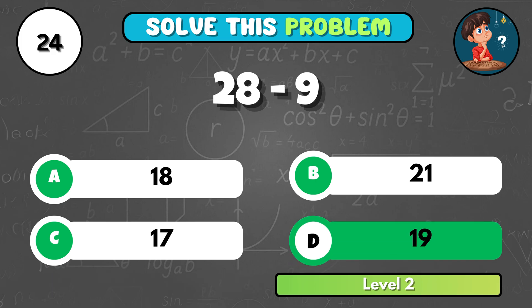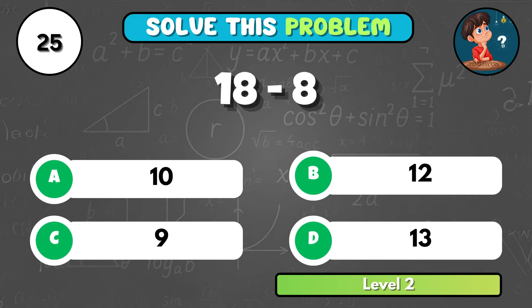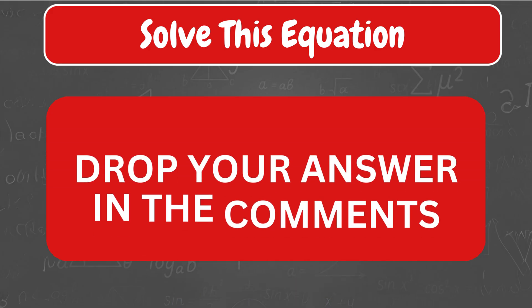What is 28 minus 9? It equals D, 19! Last one in this set! 18 minus 8 equals what? That's A, 10! Try solving this equation! If it feels too tricky, don't worry! Just hit subscribe and keep practicing with us!